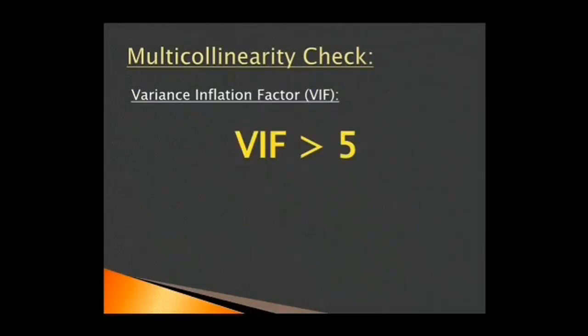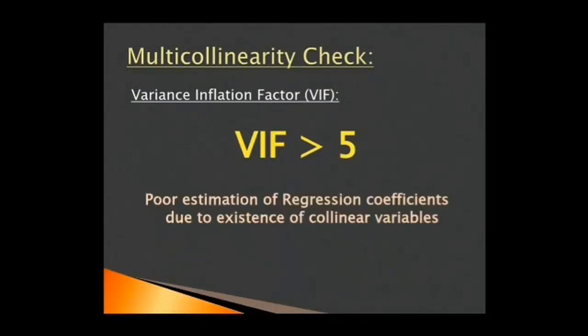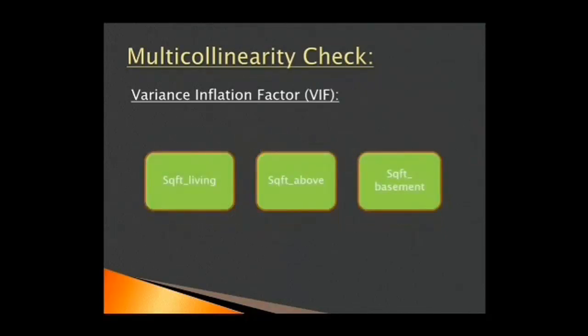If VIF exceeds 5, it is an indication that the associated regression coefficients are poorly estimated because of multicollinearity. On applying this method, we find three collinear variables: square feet living, square feet above, square feet basement. On dropping square feet living, we obtain a model in which all VIF values are below 5. Then, we say that we have successfully removed multicollinearity from our dataset.